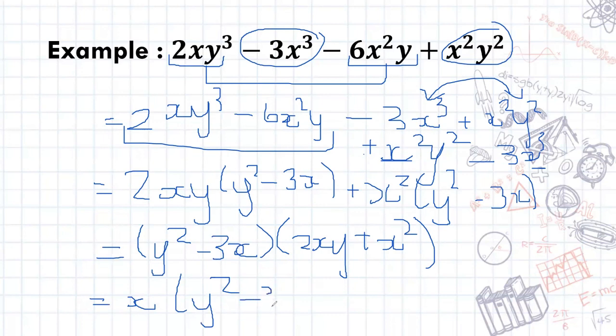This one still stays the same. Nothing has changed here. And on this one, we'll have 2y plus x. And now we have fully factorized. Oh, I forgot a bracket there. And now we've fully factorized this set of terms.